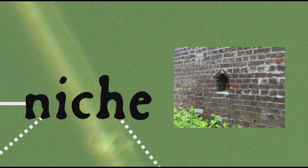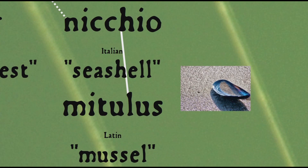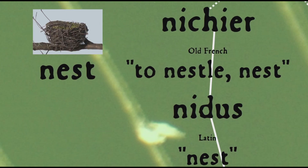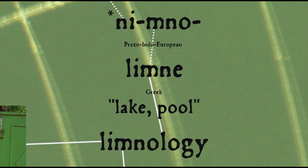English gets the word niche — originally meaning a shallow recess in a wall — from French, but its ultimate origins are debated. It might come from Italian niccio, meaning seashell, from Latin mitulus, or from Old French nichier, to nestle or build a nest, from Latin nidus, meaning nest, in which case it is related to the English word nest. Latin nidus comes from the word nidzo, originally meaning to sit down, from the Proto-Indo-European roots ni, meaning down, and sed, meaning sit. The root ni in another compound form, nimno, may come into Greek as limne, meaning lake or pool — and that's the root of the word limnology, which Thiemann was studying when he produced one of those early food web diagrams and coined the terms producer and consumer.